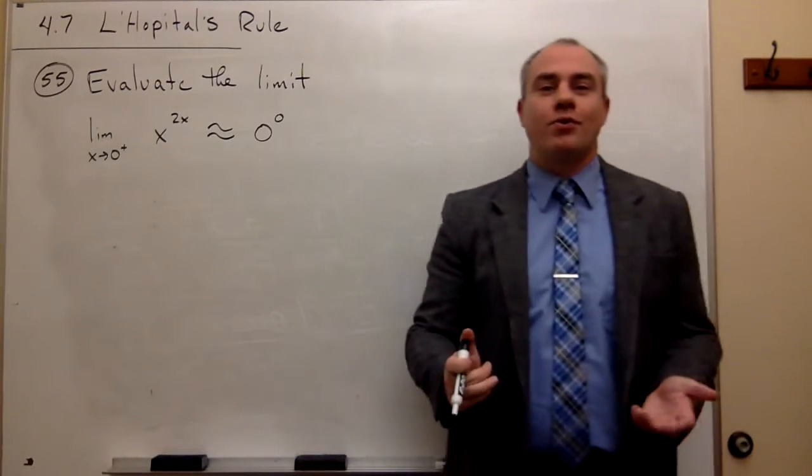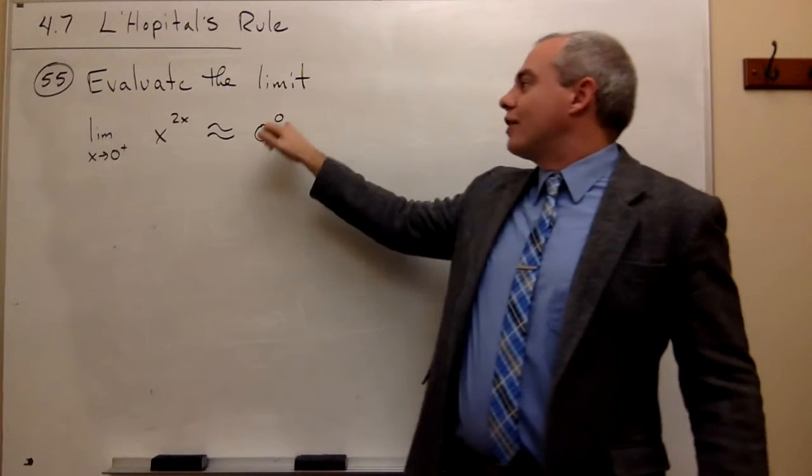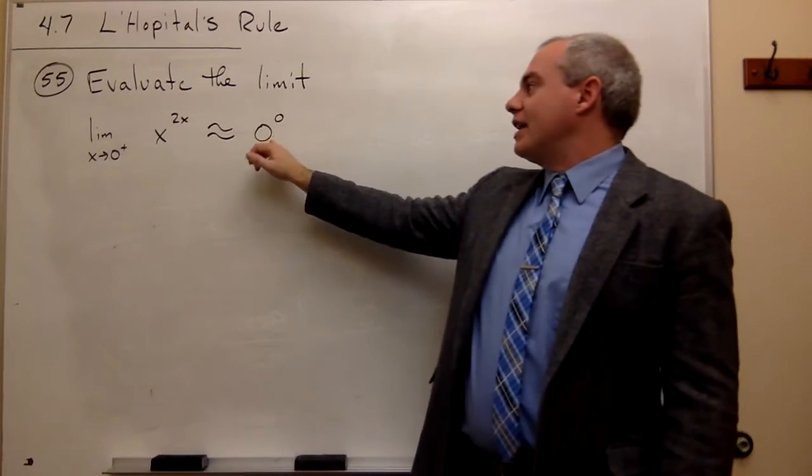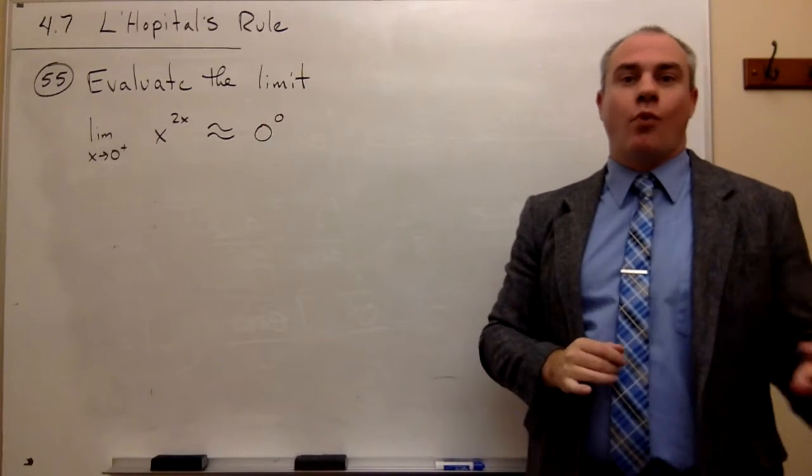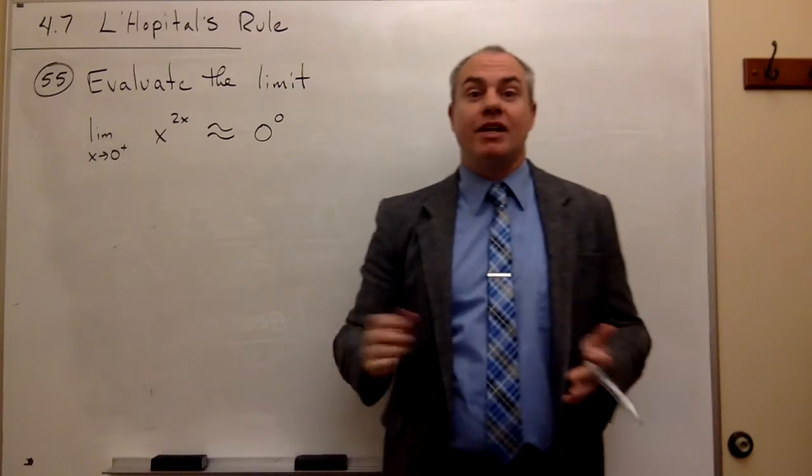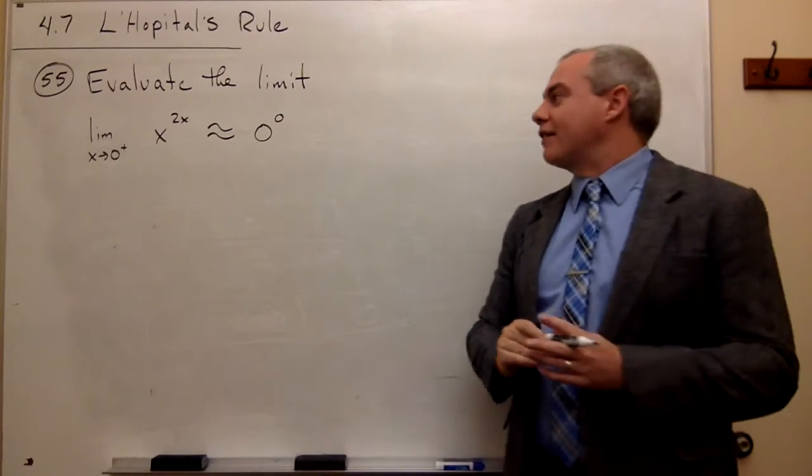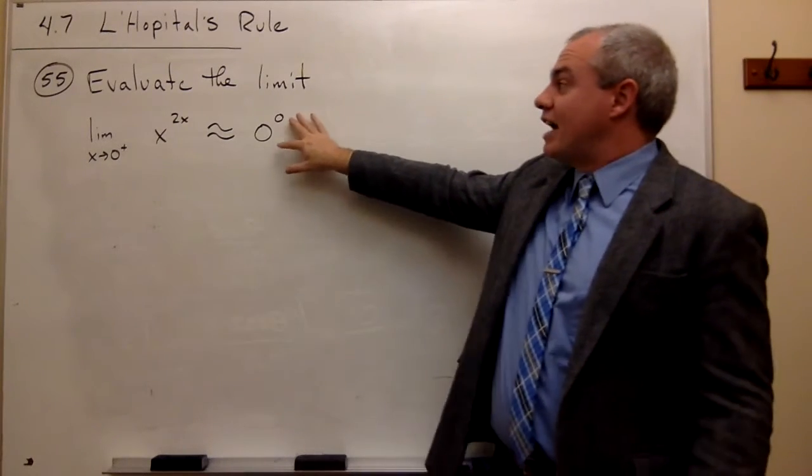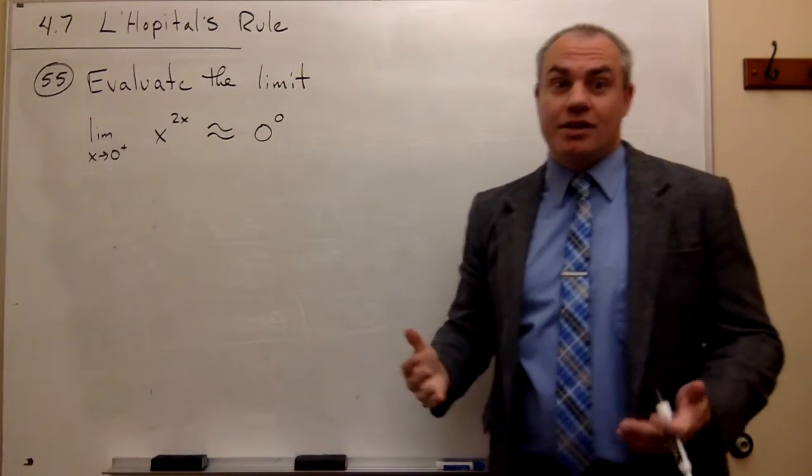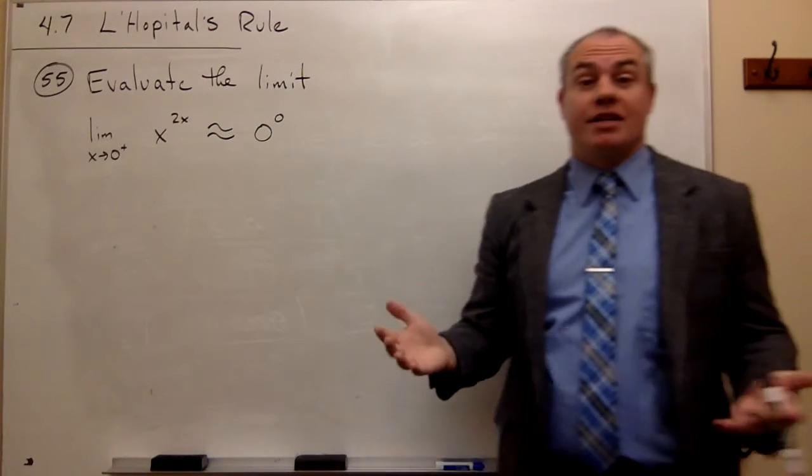Zero to the zero is kind of a cool form in that zero raised to any power is zero, and anything raised to the zero power is 1. So what do I get, zero or 1, or maybe neither? I think it's just kind of an interesting problem. But this is definitely an indeterminate form. It's not necessarily zero, it's not necessarily 1, it's indeterminate.